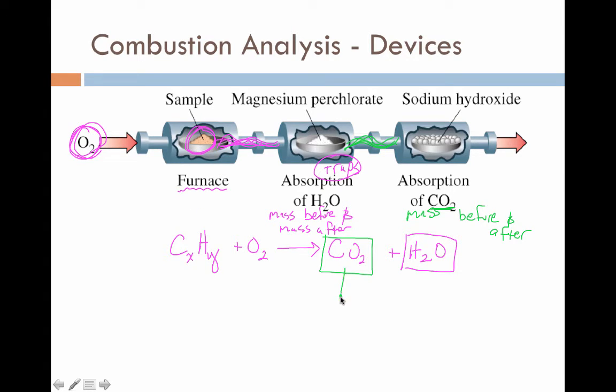This mass of carbon dioxide should correlate to a mass of carbon that originally came from this sample. And this mass of H2O must correlate back to a mass of hydrogen that originally came from this sample. We can take these mass values and use it to reverse engineer a chemical formula, basically figuring out what are the values of X and Y for this particular substance.